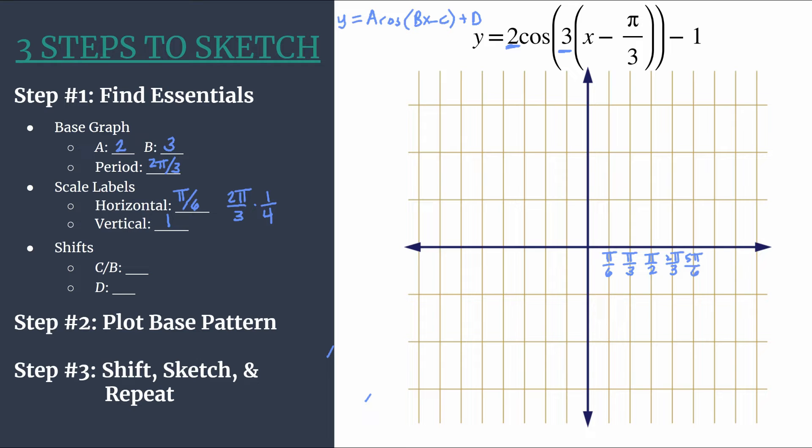Let's keep labeling. We have five pi over six, six pi over six, seven pi over six, eight pi over six, which reduces to four pi over three. So take a moment, label the negative side of the horizontal axis to all the same values, just negative.